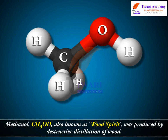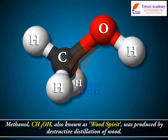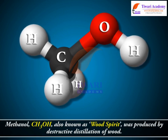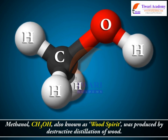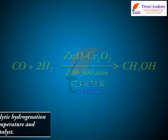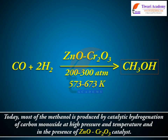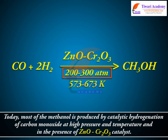Methanol, CH3OH, also known as wood spirit, was produced by destructive distillation of wood. Today, most of the methanol is produced by catalytic hydrogenation of carbon monoxide at high pressure and temperature and in the presence of ZnO-Cr2O3 catalyst.